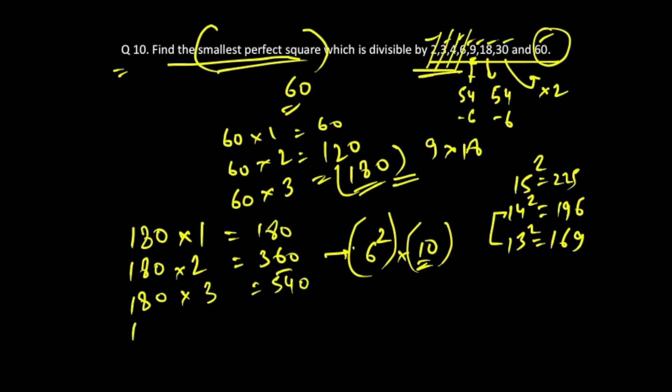Similarly, we'll proceed further. 180 times 4 is 720. Again, this is also not a perfect square. You have to keep checking for the perfect square as well, because 720 you will write as 8 into 9 into 10. You know that 9 will give you a perfect square, that is 3, but 8 is not a perfect square, similarly 10 is not. In 540 as well, you have to do the same thing.